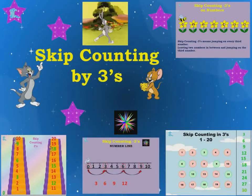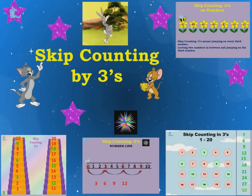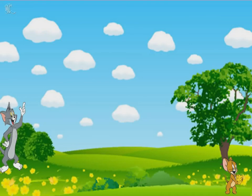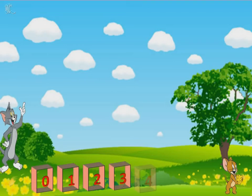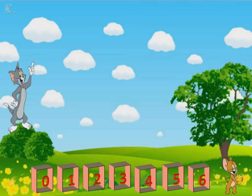Skip Counting by Threes. Children, can you see Tom and Jerry here? Tom saw Jerry and wanted to go near Jerry, so it saw a few number blocks between them. Tom jumped on these numbers to reach Jerry. Let's see how it jumped.